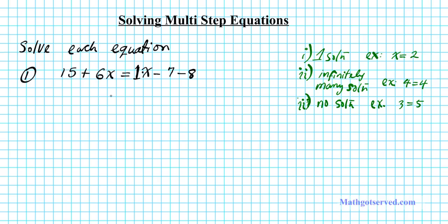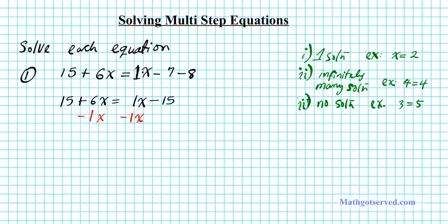Let's collect all the x's to the left and have all the numbers to the right. Notice that we can simplify the right side a little bit first. So let's rewrite: 15 plus 6x equals 1x minus 7 minus 8. The signs are the same, so we add and keep the sign — negative 15. Now let's collect all the x's on the left. This is positive 1x, so we subtract 1x from both sides of the equation. By subtracting 1x, this term adds up to 0.